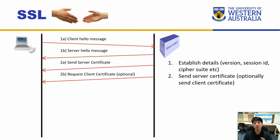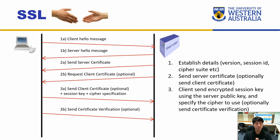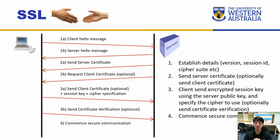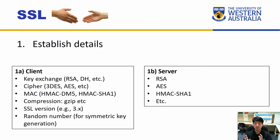If you want to authenticate the user as well, the server can request the client's certificate too. Once this is done, the client will provide some additional information to the server to establish the secure connection, including a client certificate and a certificate verification of the server. Once this handshake is complete, you can start to communicate in a secure fashion. Let's have a look at what kind of information needs to be sent around.